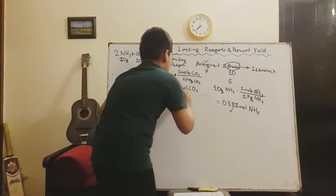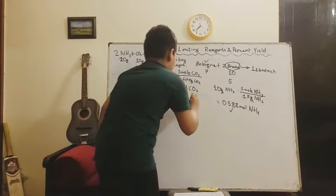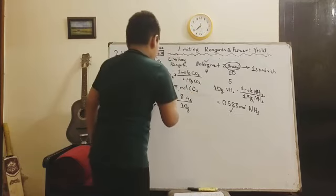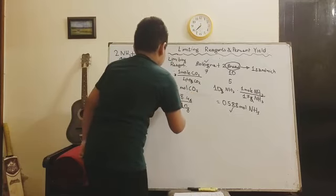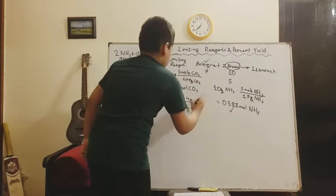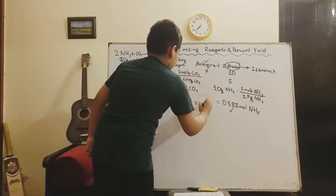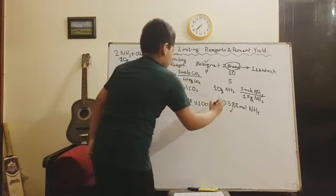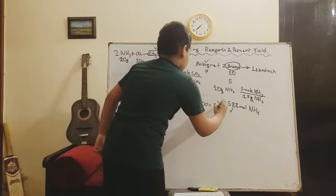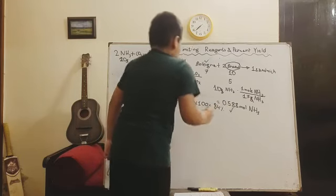So you are expecting there's going to be 10 grams of yield, but there is 8.4 grams. By the way, since this is percent, you have to multiply by 100. So doing all the calculation, the percent yield would be 84 percent. So what you expect won't exactly happen all the time.